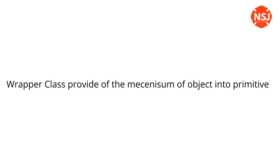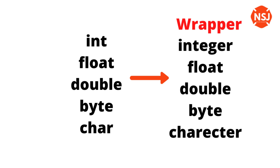The wrapper class provides the mechanism to convert primitive types into objects and objects into primitive types. If the object is primitive, this is the wrapper class. The wrapper class covers Boolean, Character, Integer, Byte, Short, Long, Float, and Double.